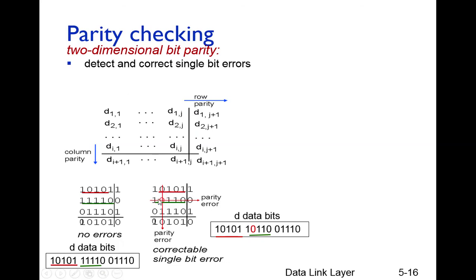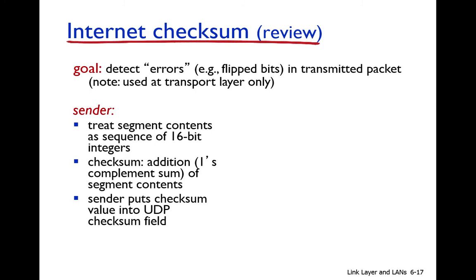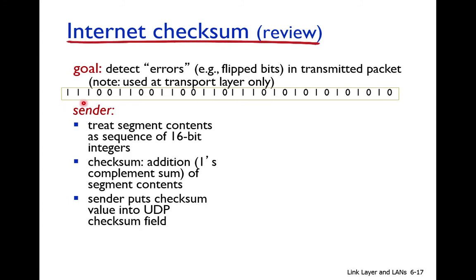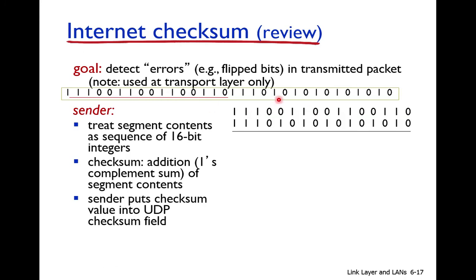Next, we discuss the internet checksum, used for error detection in bit errors. The sender treats the segment content as a sequence of 16-bit integers. The data bits are split into 16-bit rows — the first 16 bits form the first row, the next 16 bits form the second row — and these are added together.